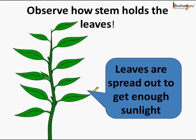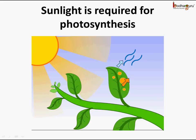Now you see, the leaves are spread out to get enough sunlight. We all know that sunlight is required by the leaves to prepare food during the photosynthesis process.